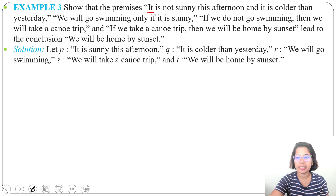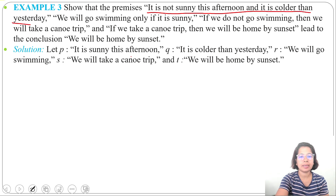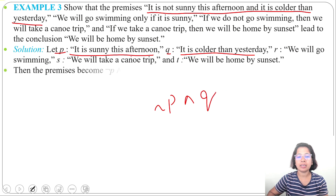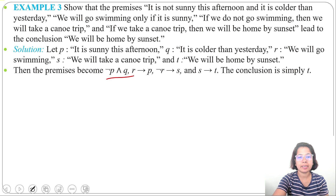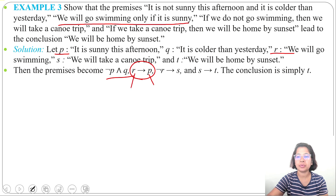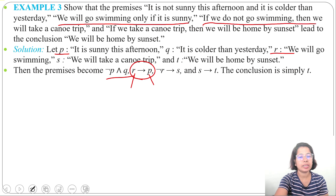The first premise, 'it is not sunny this afternoon and it is colder than yesterday,' translates to negation P ∧ Q. The second premise, 'we will go swimming only if it is sunny,' translates to R implies P — meaning R is 'we will go swimming' and P is 'it is sunny.'